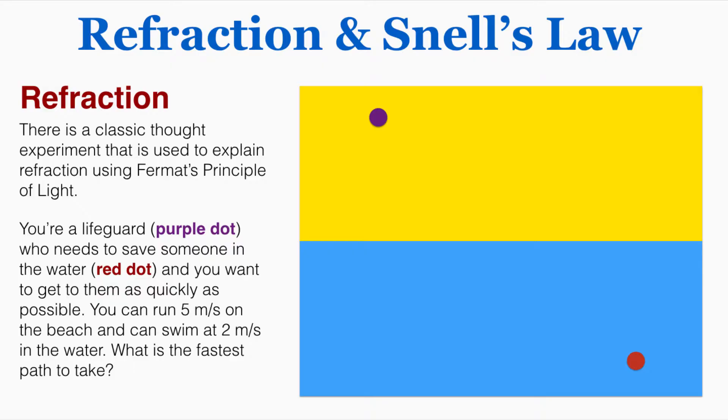So one option for a path is to just run straight to the water and then start to swim out, but because it takes you so long to swim in the water and you can move so much faster on the beach, you're probably going to want to spend more time on the beach if you can, so that first path seemed pretty slow. Another path option would be to run to exactly the point that the person is at and then swim straight out like this. Another possibility would be to just run in a straight line, although that doesn't seem to make quite as much sense. And another option would be somewhere in between those, and that in-between space probably is your best bet.